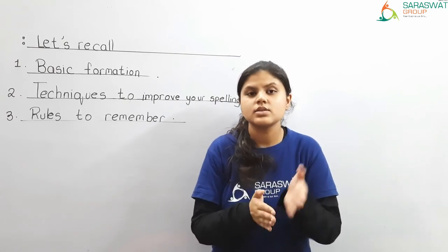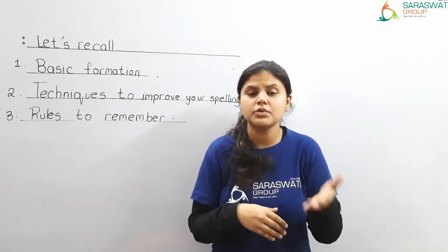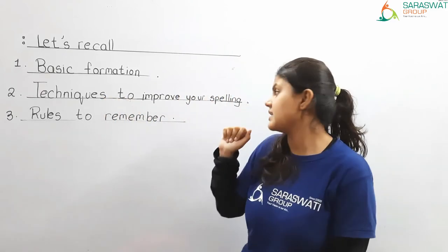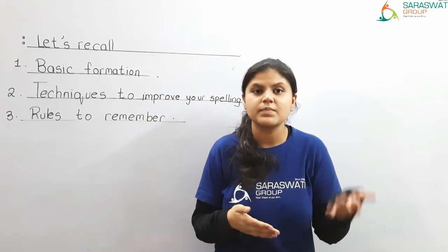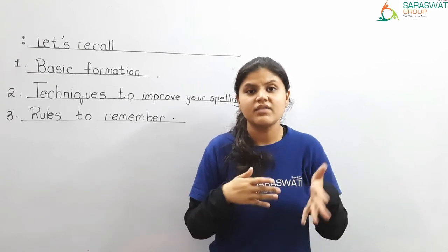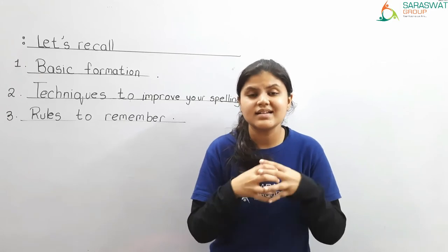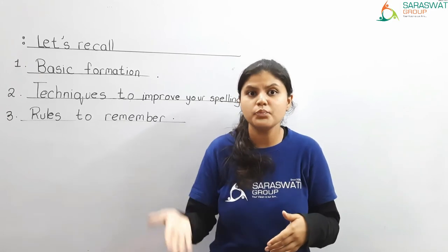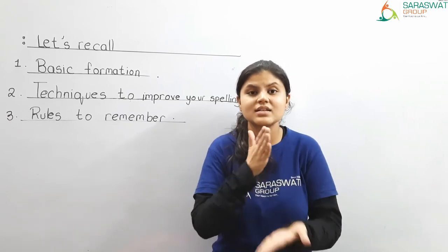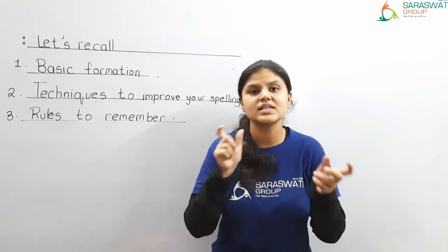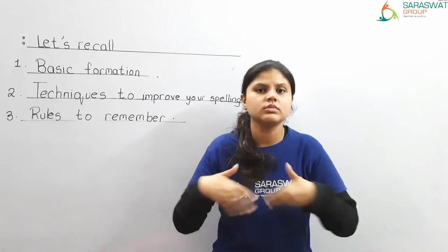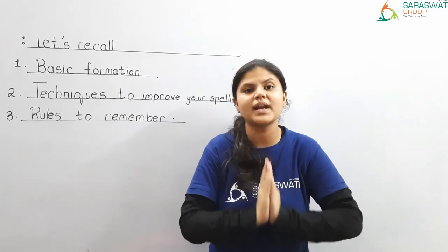First you need to practice it and improve your spellings. Then the next is: techniques to improve your spellings. There are various techniques. Segment the words, then play board games — these are techniques to improve your spellings. Play board games, segment your words — segmenting your words means cut your words into halves so that you can spell it correctly. You can spell it very easily and nicely. You need to practice that.